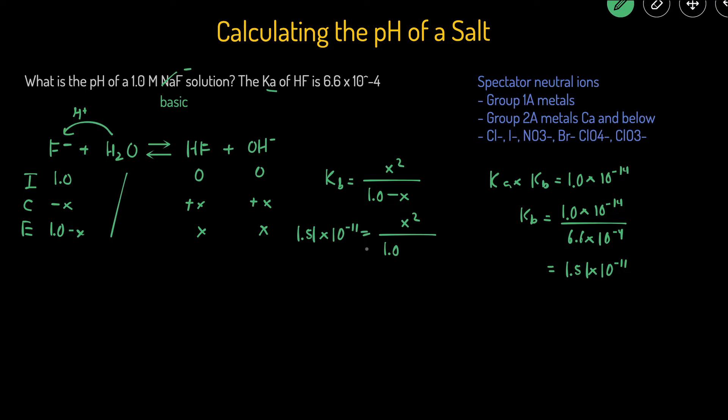Then we can just multiply both sides by 1, and then take the square root of both sides to solve for X. So really, this comes down to square rooting this number right here. And so X is going to equal 3.89 times 10 to the negative 6.